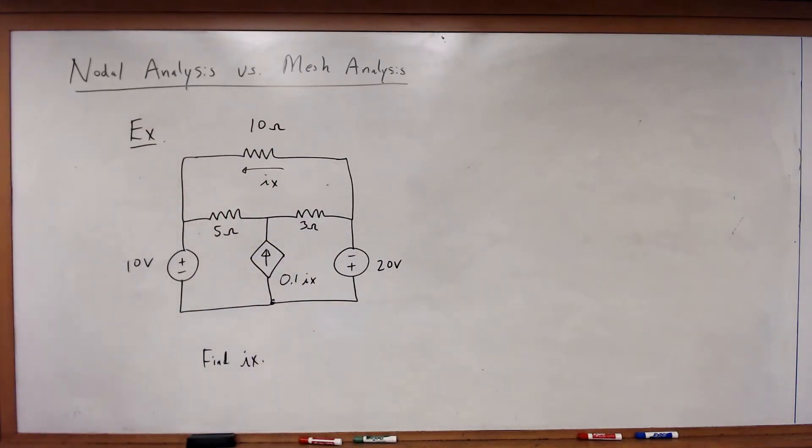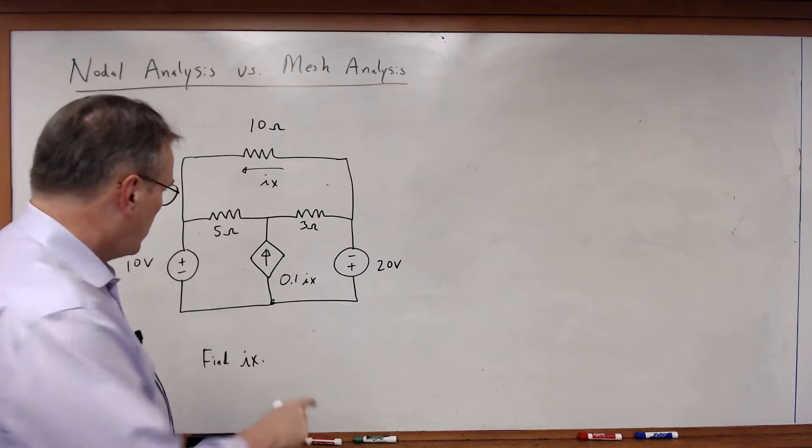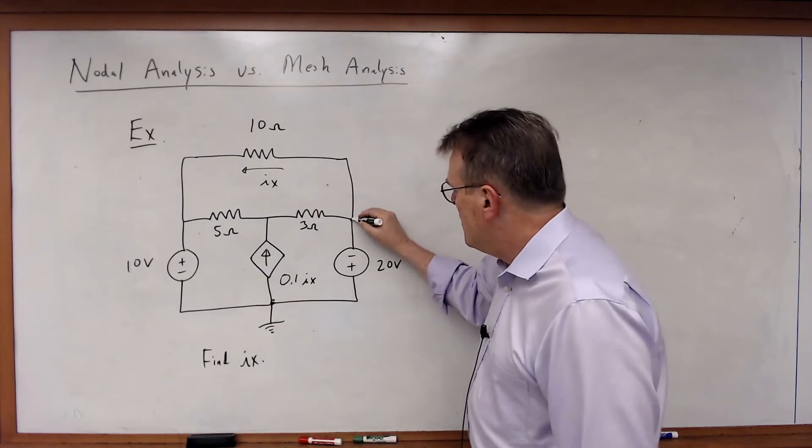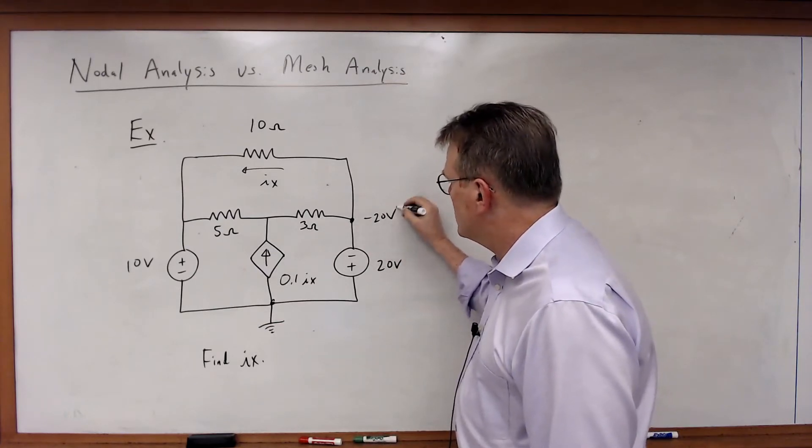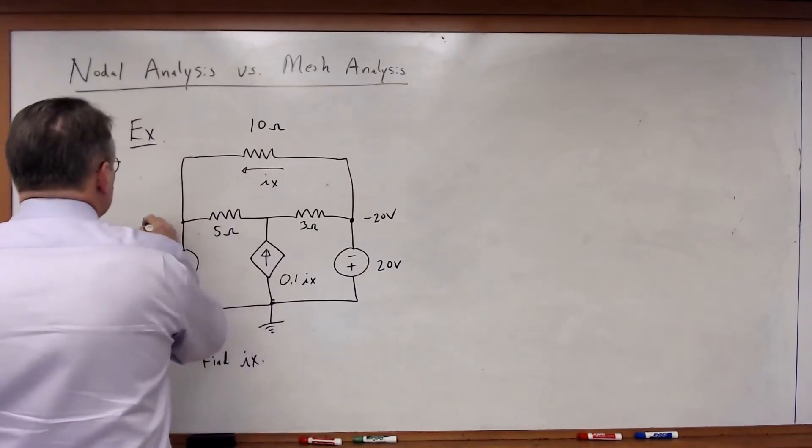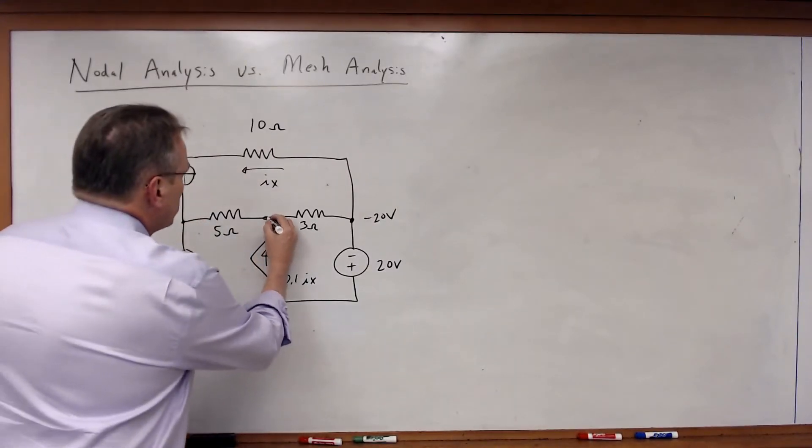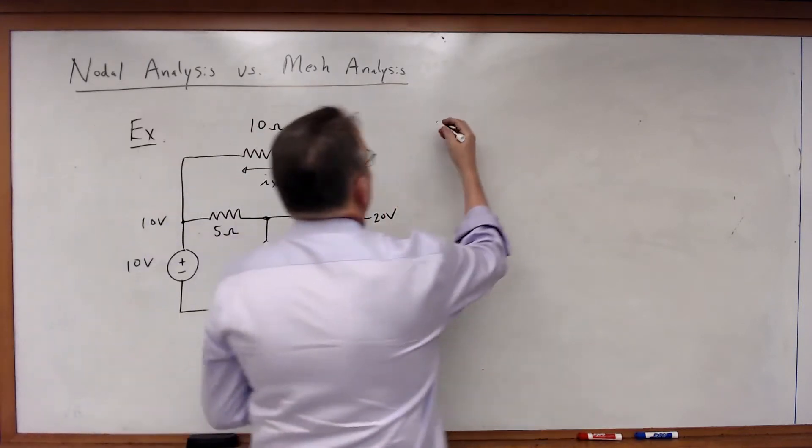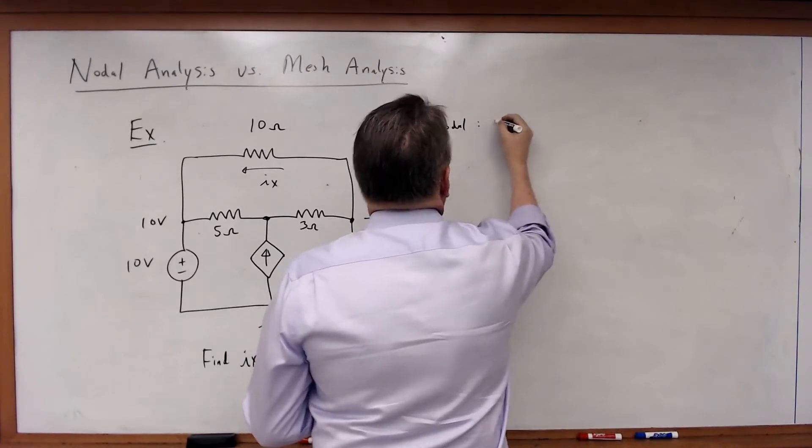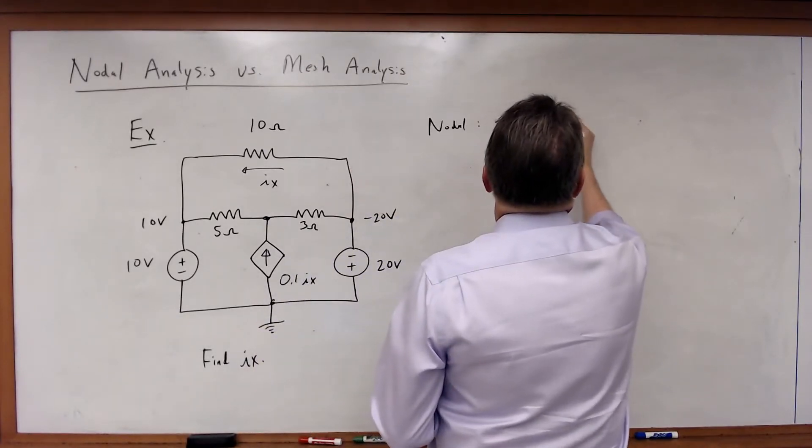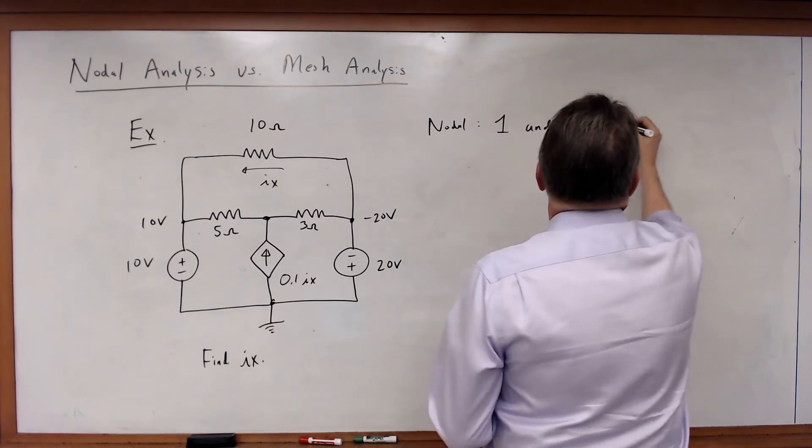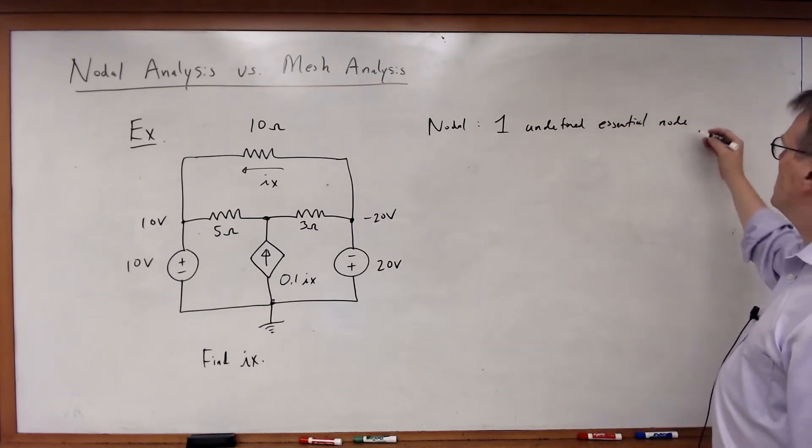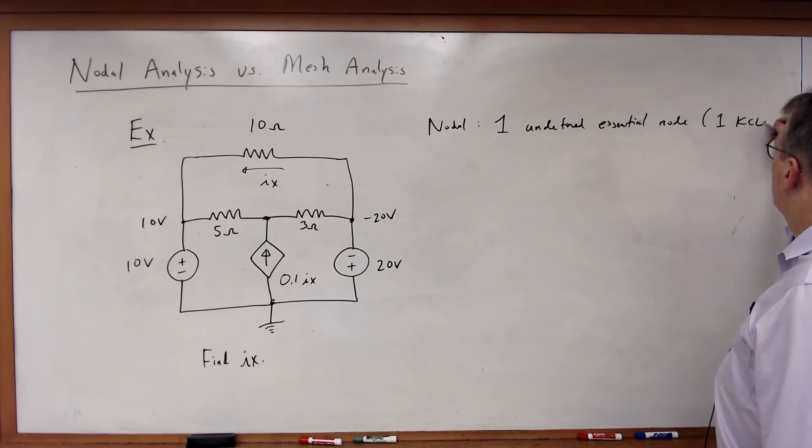If I were approaching this nodally, probably the smart place to put my ground would be here at the bottom. Because if I put the ground here at the bottom, that means this node becomes minus 20 volts, this node becomes 10 volts, and I am left with only one undefined essential node. That means only one KCL equation in order to solve.